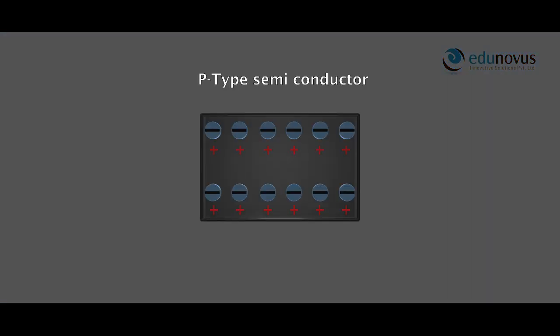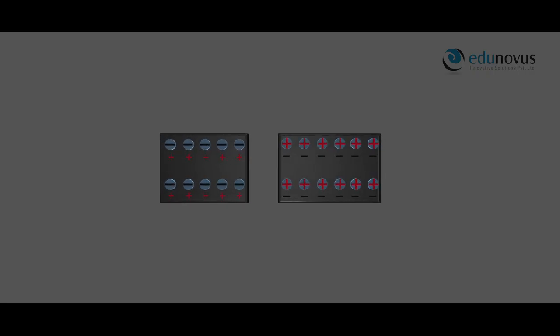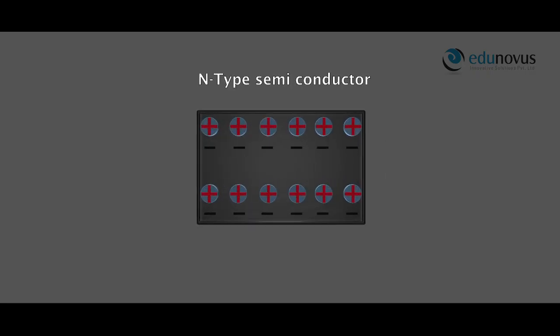A P-type semiconductor is the one which has free holes and impure immobile negative ions. So we can say that P-type semiconductor has an excess number of holes and they are majority charge carriers. Whereas N-type semiconductor is the one which has free electrons and impure immobile positive ions, so N-type semiconductor has excess number of electrons and they are the majority charge carriers.